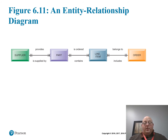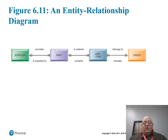One part is ordered by many line items, meaning we can have a line item with the same part on it many times. However, we can only have one part per line item. And there could be many line items on an order — an order includes many line items.